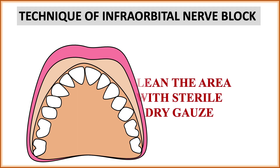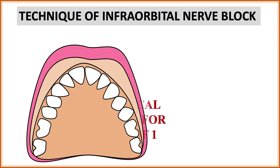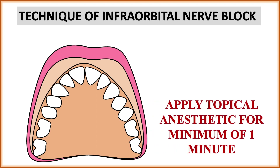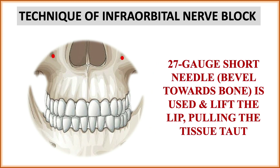Beginning the detailed technique: clean the area with a sterile dry gauze as shown in the figure, then apply topical anesthetic — such as xylocaine jelly — for a minimum of one minute so that there is painless insertion of the needle and the patient will not feel the pain. A very important point: use a 27-gauge short needle, and the bevel is always towards the bone. Lift the lip and pull the tissue taut as shown in the figure.